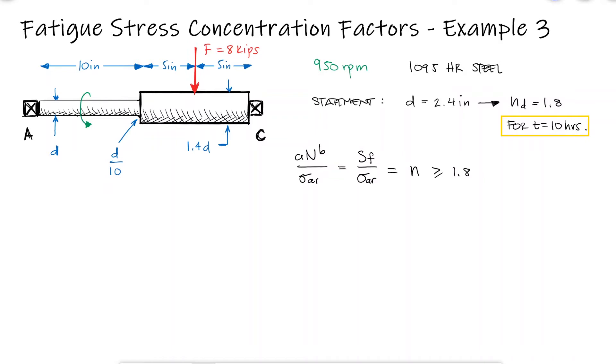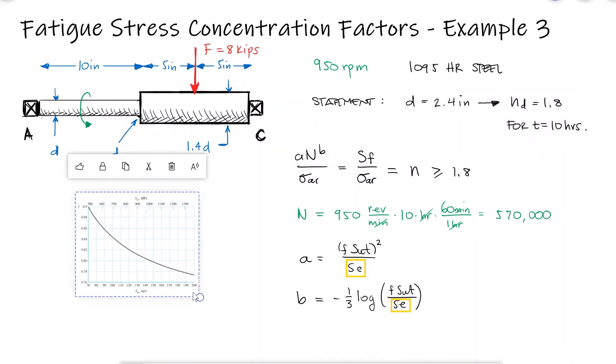The number of cycles for 10 hours of operation at 950 revs per minute is equal to 570,000 cycles, so we are in fact between 1000 and 1 million cycles. The a and b coefficient will depend on f and the endurance limit.